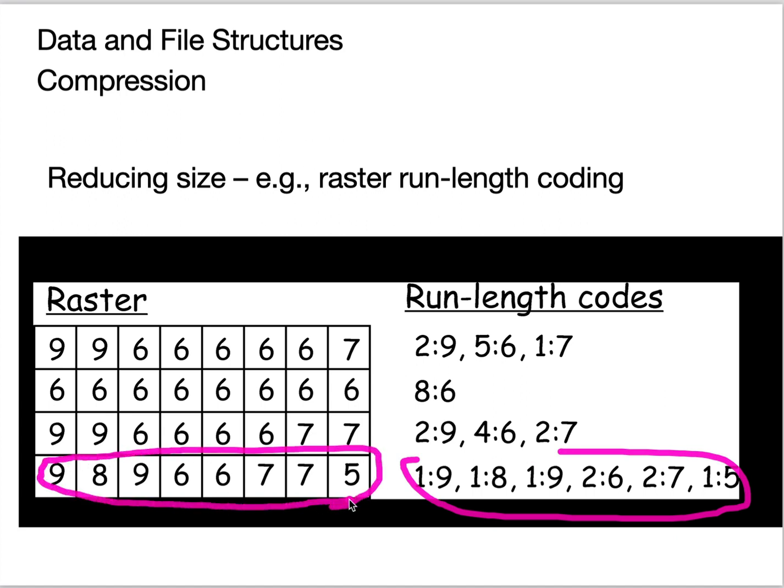You would never use it for real data. But for categorical data, land cover, where the land cover patches are fairly homogenous, it's a great way to compress it. There's a bunch of other compression techniques out there.